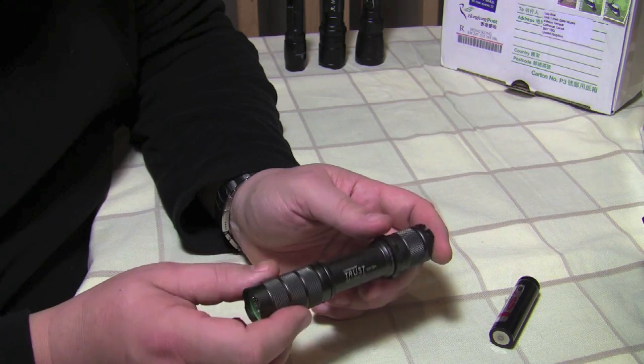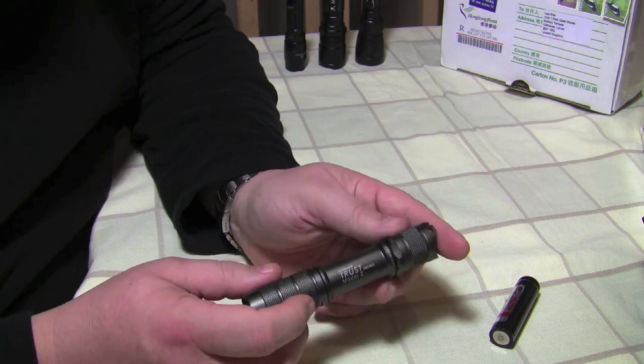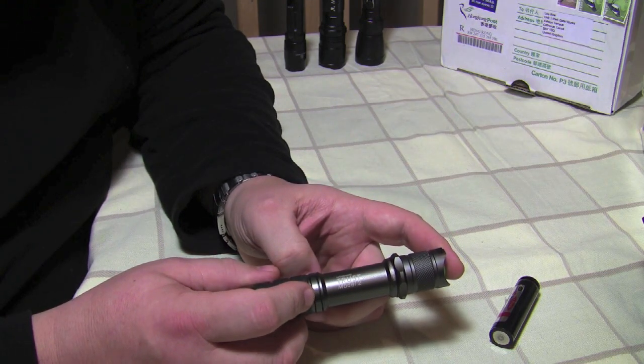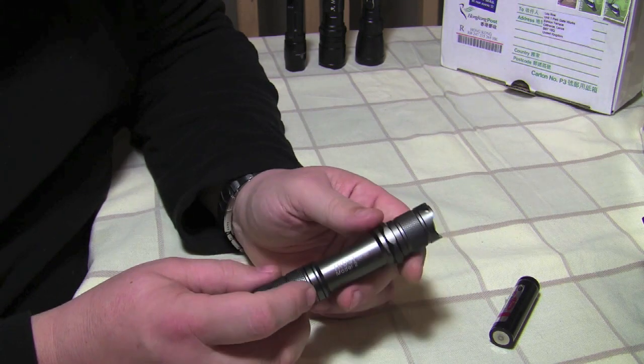When you're running on the 18650, you're looking at five lumens and ramping up into turbo mode at 350 emitter lumens.